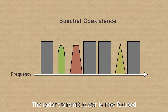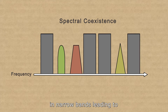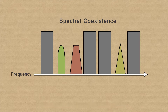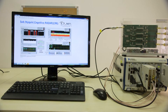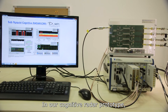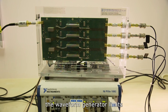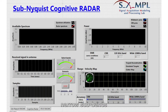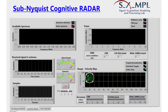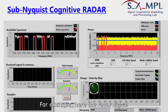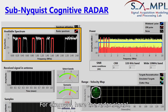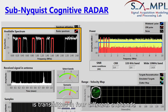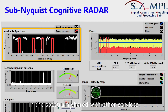The radar transmit power is now focused in narrow bands, leading to an enhanced signal-to-noise ratio. In our cognitive radar prototype, the waveform generator limits the transmit signal to only four narrow sub-bands. For example, here the radar signal is transmitted in four different sub-bands in the spectrum shared with other services.